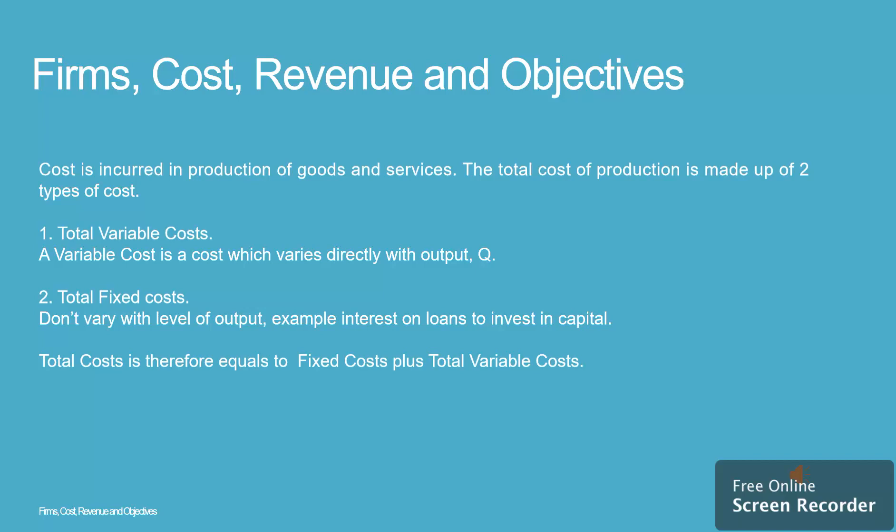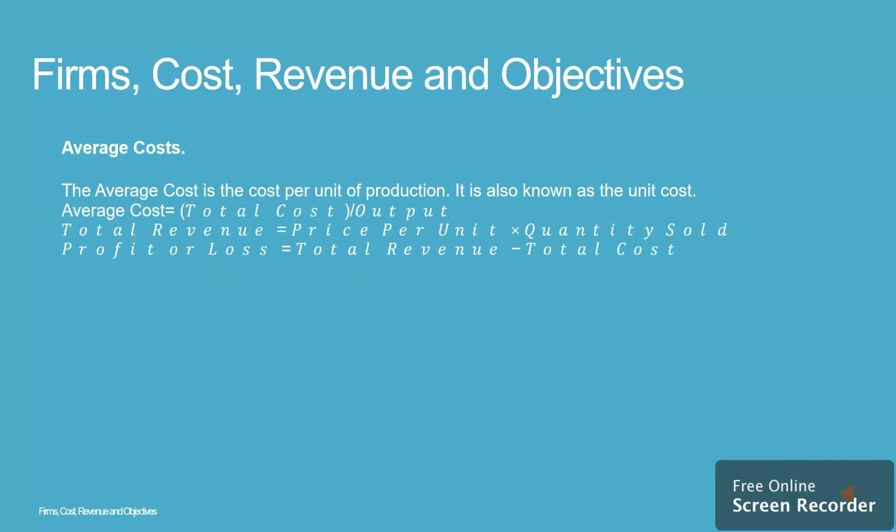1. Average costs. The average cost is the cost of production for each unit of a good. It is also known as the unit cost. Average cost is equal to total cost divided by output, Q.